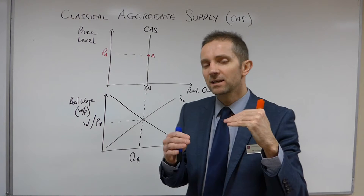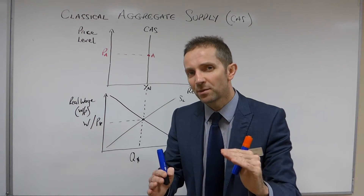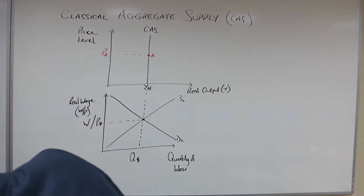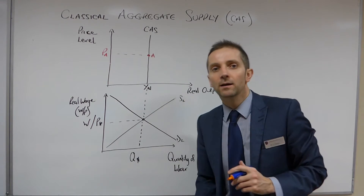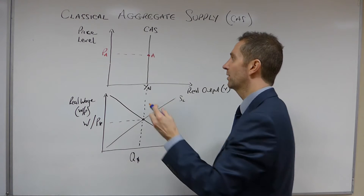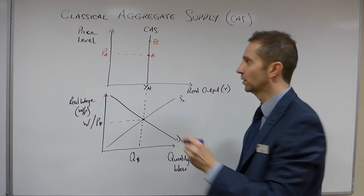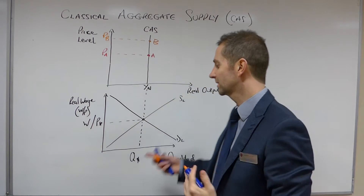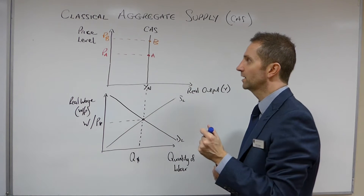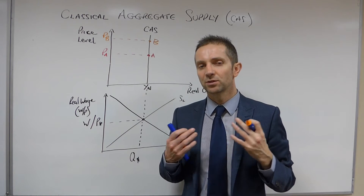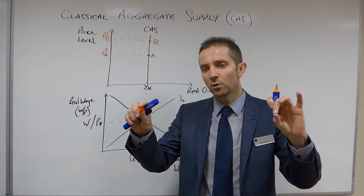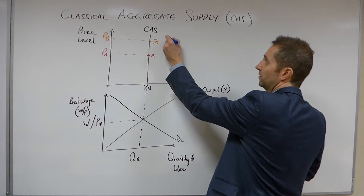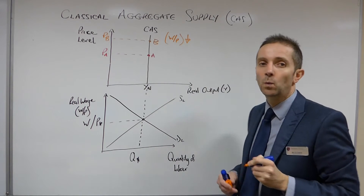Let's now consider in a little bit more detail what we were looking at the other day with regard to changes in the price level and how adjustments take place in the labour market. What if the price level in the AS diagram increased to B, leaving us with a price level of PB? What would go on in the labour market in order to ensure that it cleared once again at W/P* Q*? Well, if the price level goes up, the money wage — the top line — stays the same, therefore people can afford to buy a smaller basket of goods than they could previously. So the value of the real wage W/P will therefore fall.